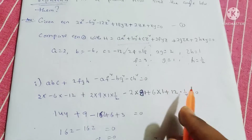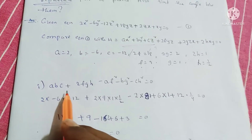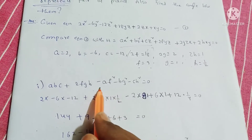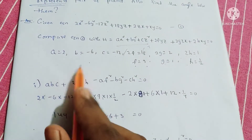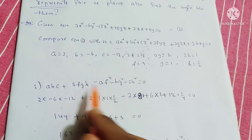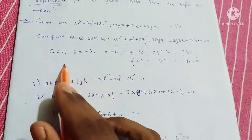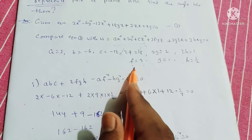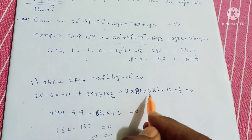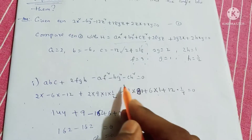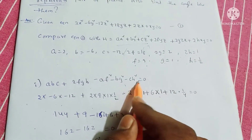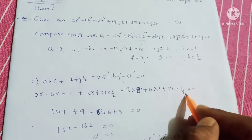We need to verify four conditions. First condition: abc plus 2fgh minus af squared minus bg squared minus ch squared equals 0. Substituting: a equals 2, b equals minus 6, c equals minus 12, plus 2 times f equals 9 times g equals 1 times h equals 1 by 2, minus 2 times 9 squared (81), minus (minus 6) times 1 squared, minus (minus 12) times 1 by 4.